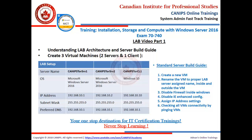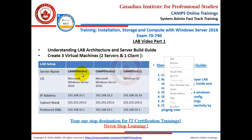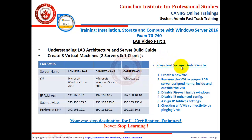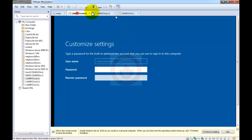Hello everyone, this is the second video in preparing the lab architecture for exam 70-740. In the first video we prepared two servers and one client. In this video we're going to follow standard server build guidelines: rename each server to a proper name, disable the firewall, disable IE Enhanced Security, assign IP addresses, and verify connectivity between the servers.